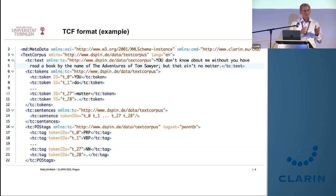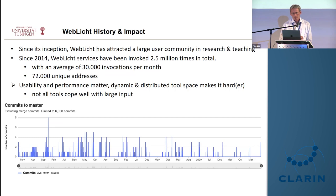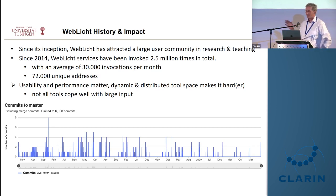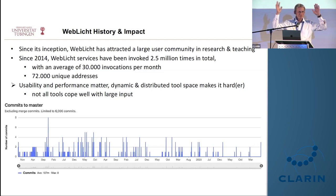WebLicht has a large user base — since 2014 we have been recording usage on stats.clarin.eu, and the number of tool invocations from inside WebLicht is quite impressive. Usability and performance matter, but ensuring smooth operation in a distributed tool space is challenging. Regular commits to the WebLicht GitHub repository, going back to 2012, show it is continuously improved — though the tools themselves are outside our direct control.